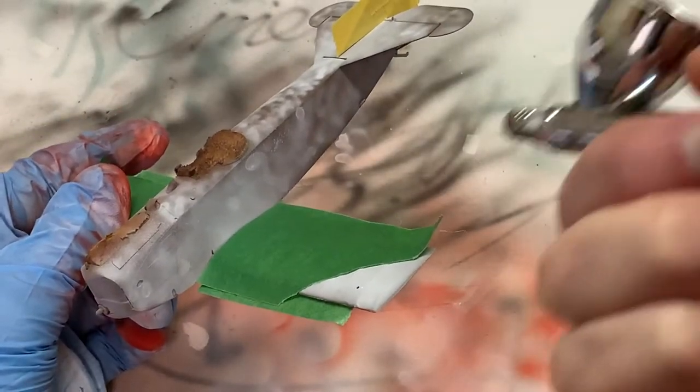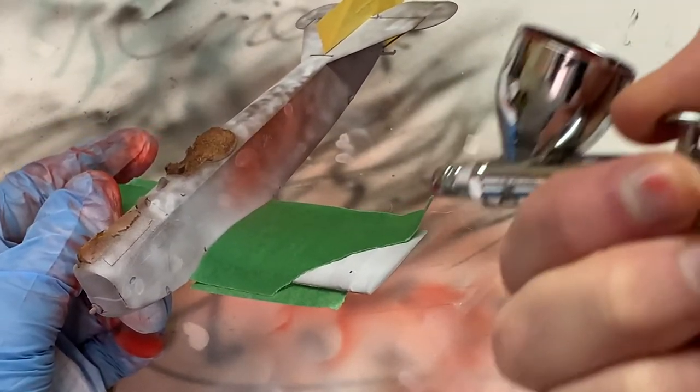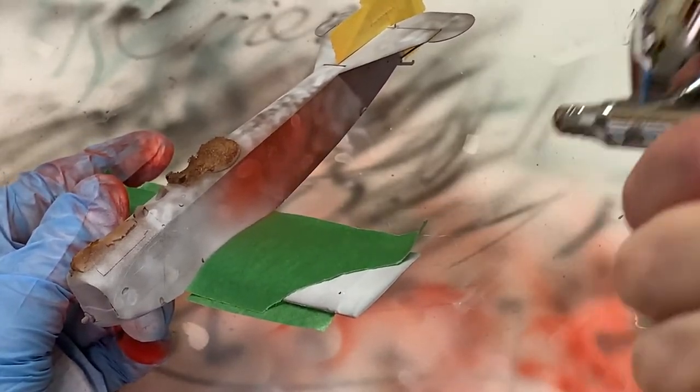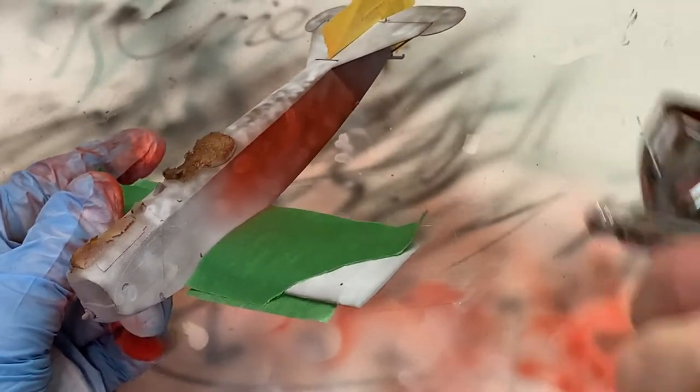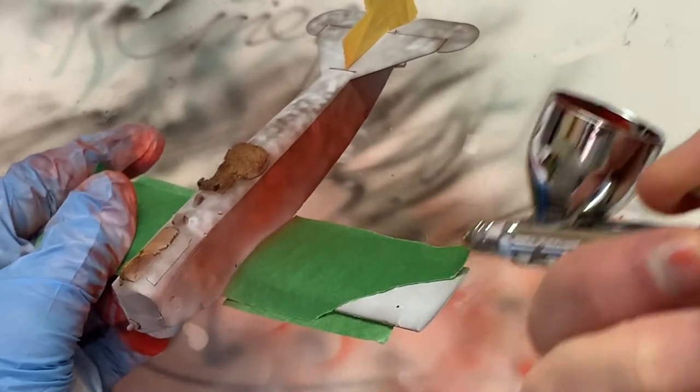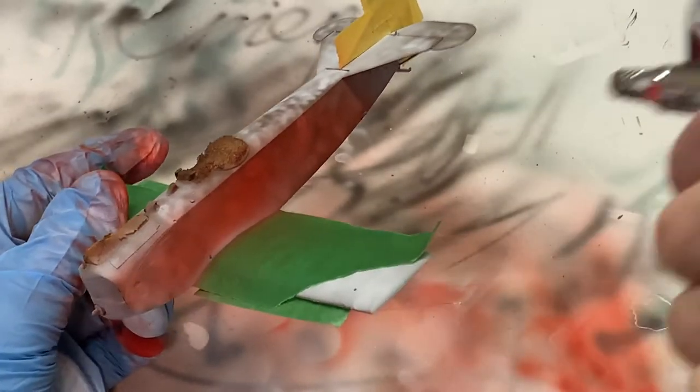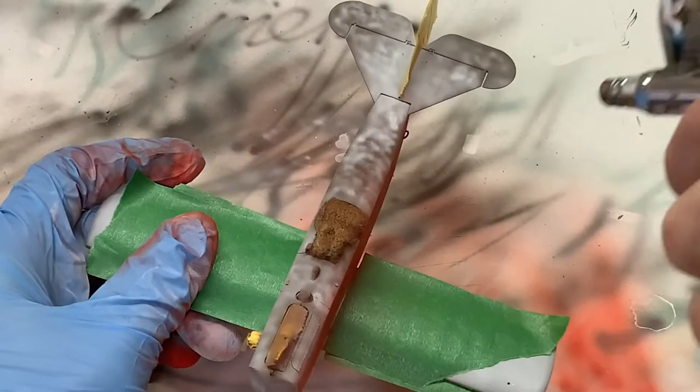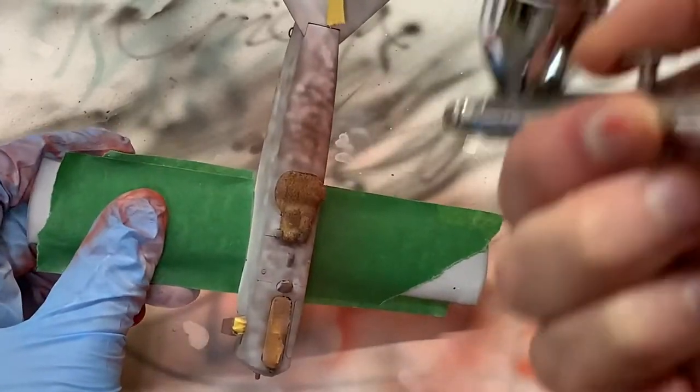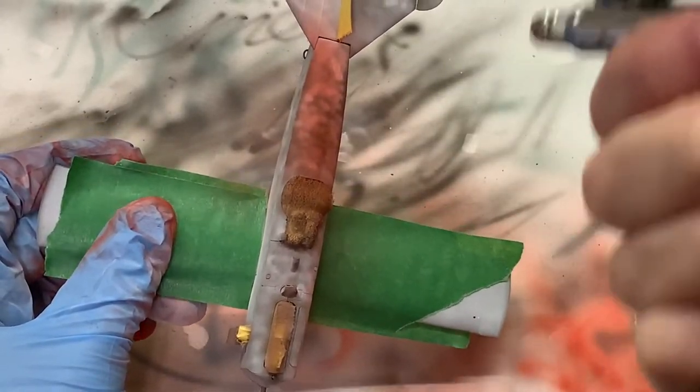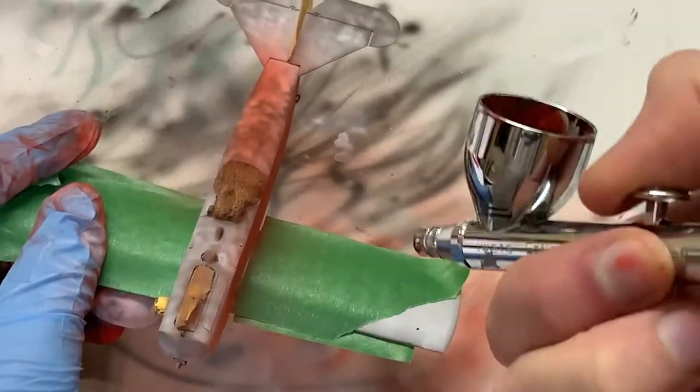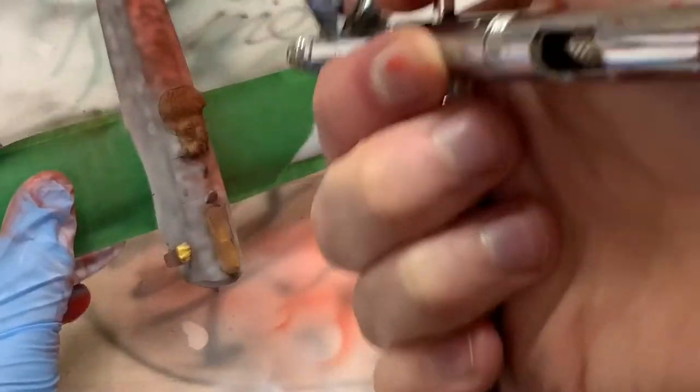The same goes for the fuselage. I spray the paint in very thin layers and slowly build up the effect. This is where the marbling starts taking effect because we're spraying very thin layers on top of it. The thicker the paint layer, the harder it will be to see the marbling.